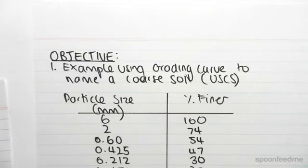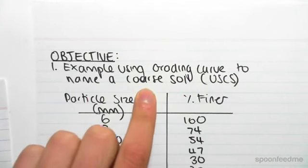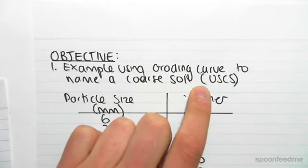Hey guys, the objective of this video is to do an example using a grading curve to come up with a name for a coarse soil. This is of course under the Unified Soil Classification System.